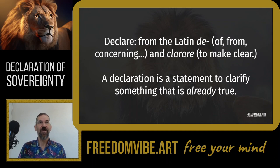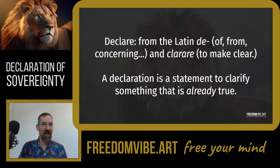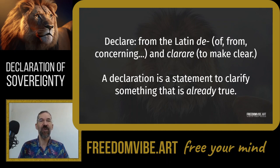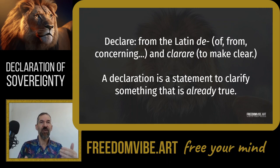Let's look at the first word: declaration. That comes from the verb declare, which comes from the Latin. It's a compound word from the prefix 'de,' meaning of, from, or concerning, and the verb 'clarare,' meaning to make clear or to clarify. From that etymology, we can see that a declaration is simply a statement that wishes to clarify or intends to clarify something that is already true. A declaration is not making something true — it's simply clarifying the truth itself.